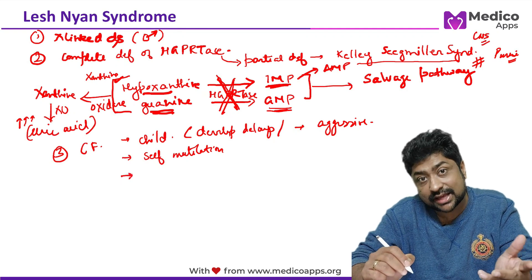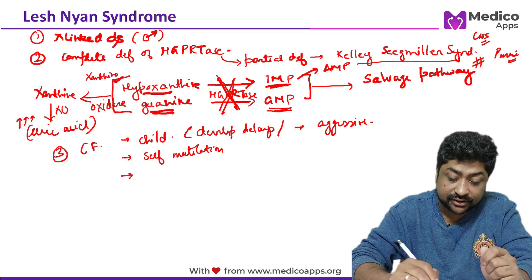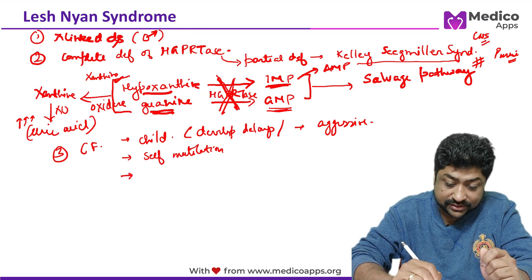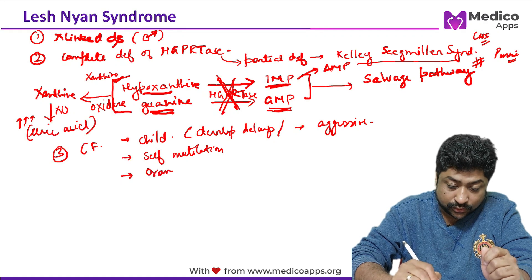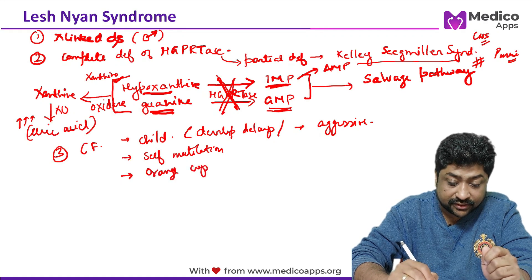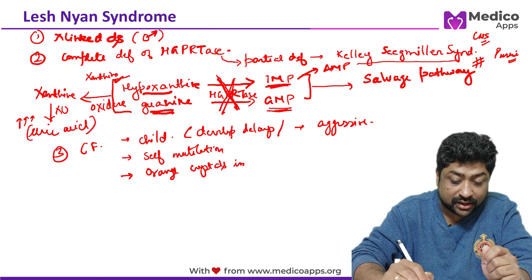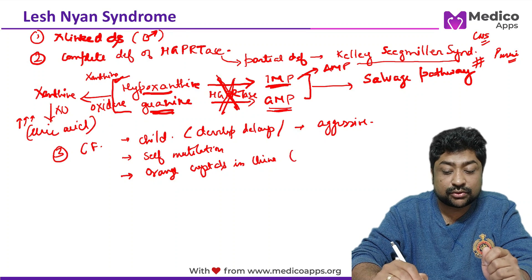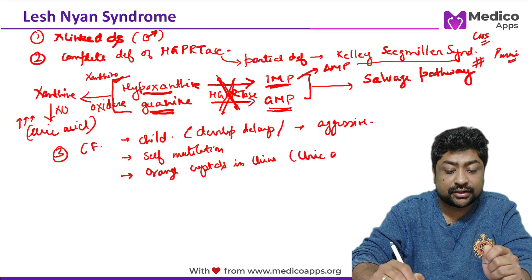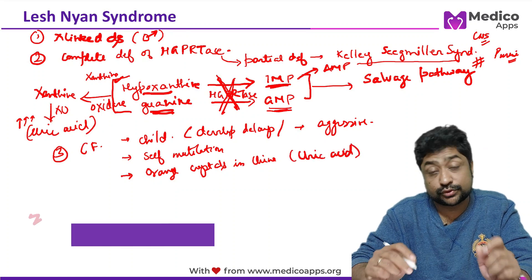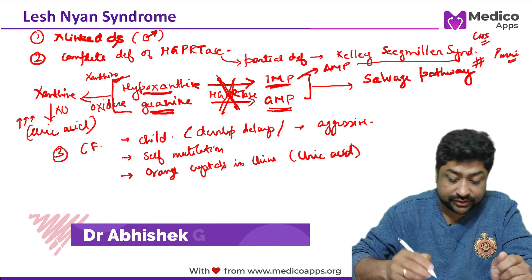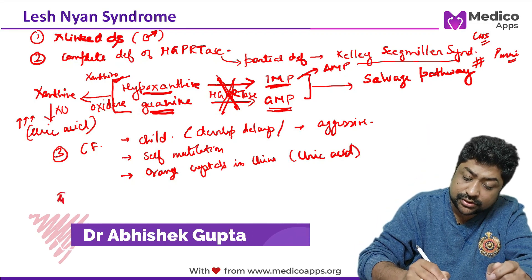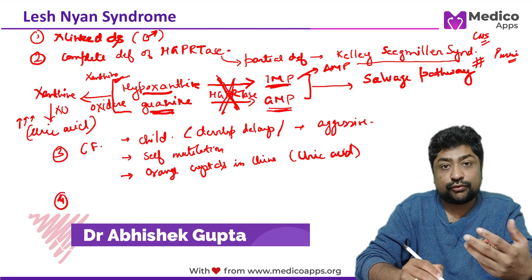Another characteristic clinical feature, asked in examinations, is the passage of orange crystals in the urine. These orange crystals are uric acid crystals, reflecting the elevated uric acid levels in this condition.